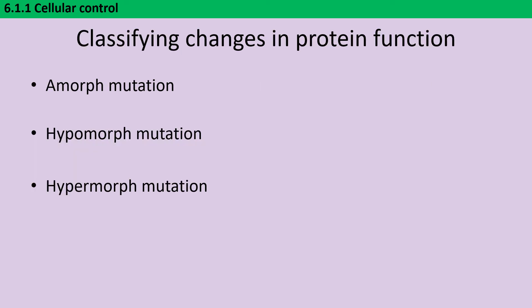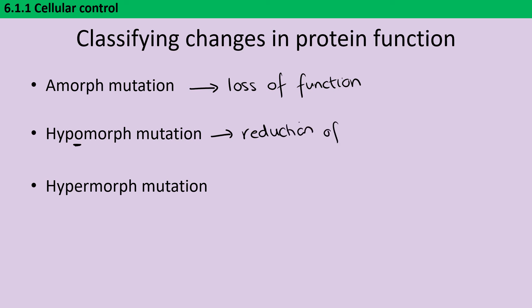In addition to classifying mutations by their impact on DNA and amino acid sequence, we may also classify them by their impact on protein function. Amorph mutations cause loss of function of the protein — this could be from inserting a stop codon, changing a vital amino acid, or a frameshift that garbles the whole back half of the protein. Hypomorph mutations lead to a reduction of function, for instance if a promoter region has been mutated or only a small part at the end of the protein has changed. Hypermorph mutations lead to gain of function, though as noted these are far rarer.